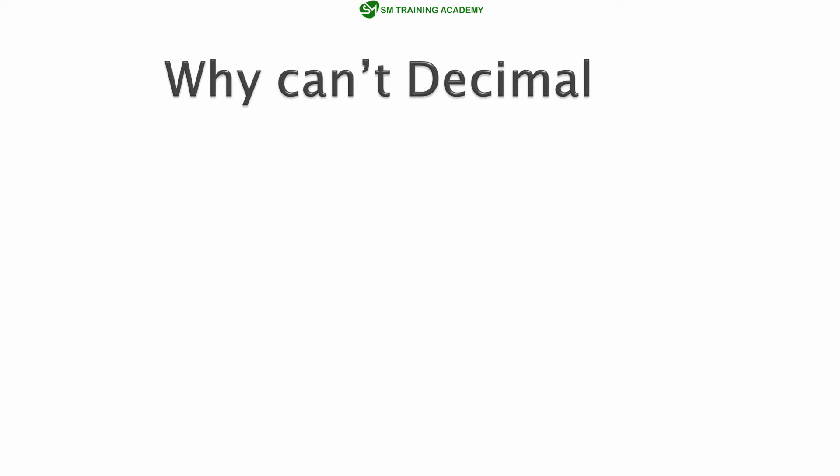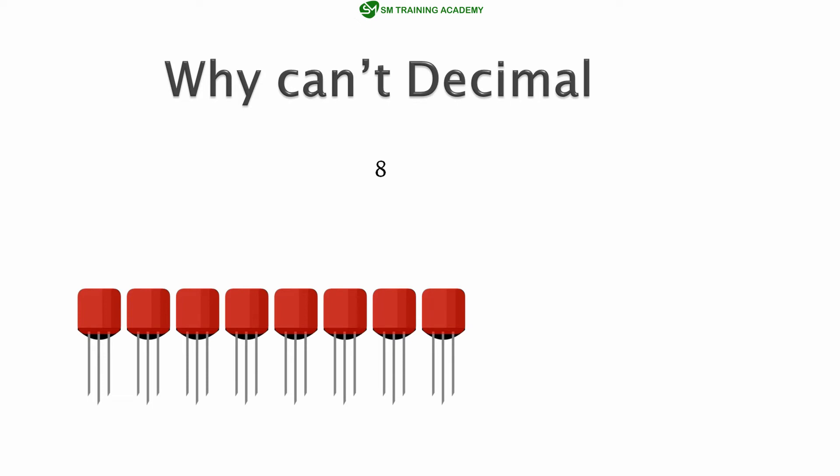Now let us discuss why we can't use the decimal numbering system in computers for storing numbers. For example, if I want to store the number 8 in decimal as-is in my computer — since computers use transistors for storing numbers — I would need 8 transistors turned on to represent the number 8. For storing the number 10, I need 10 transistors turned on. And for a large number like 10 lakh or 20 lakh, I would need 10 lakh or 20 lakh transistors turned on to represent that single number.